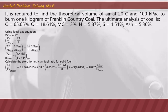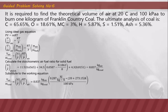We first calculate the stoichiometric air-fuel ratio for the solid fuel, which is 8.837 kg-air per kg-coal. Substituting into the formula along with the gas constant of air (0.287 kJ/kg·K), the temperature converted to Kelvin (293 K), and the pressure of 100 kPa absolute, we obtain the theoretical volume of air as 7.43 cubic meters of air per kilogram of coal.